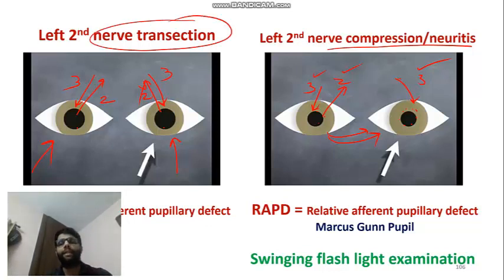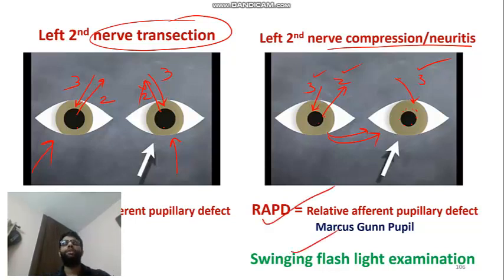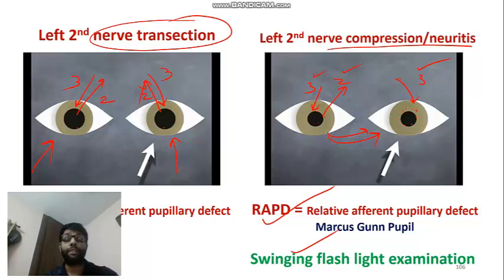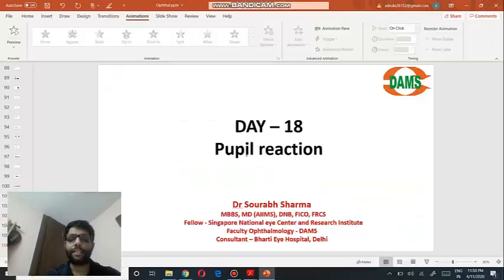When you swing the light to the affected eye it paradoxically dilates, and swinging from the normal eye also causes dilation because the left second nerve does not have the capacity to keep constricting. So early compressions and early neuritis produce RAPD, and afterwards when the total optic nerve is atrophied or transected there is TAPD. RAPD is diagnosed by the swinging flashlight examination. Thank you very much, thanks for listening.